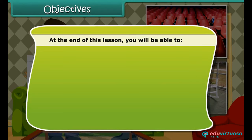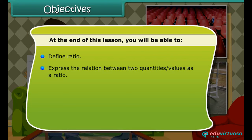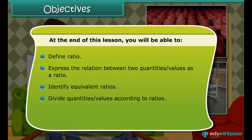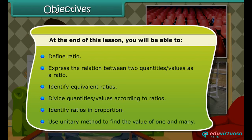At the end of this lesson, you will be able to: define ratio; express the relation between two quantities as a ratio; identify equivalent ratios; divide quantities and values according to ratios; identify ratios in proportion; and use the unitary method to find the value of one and many.